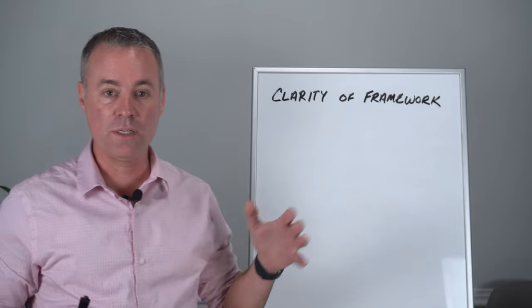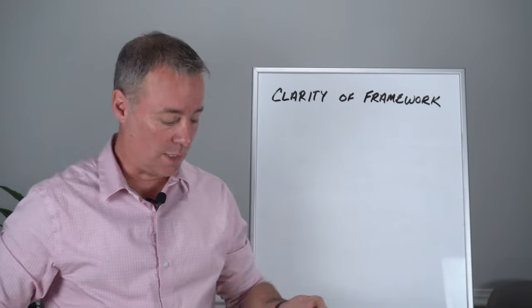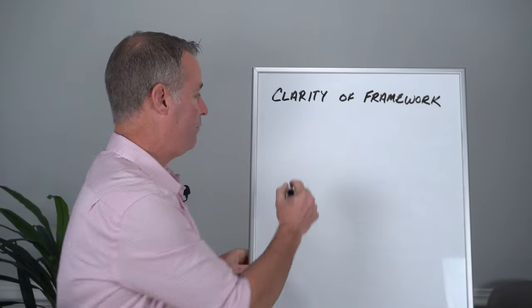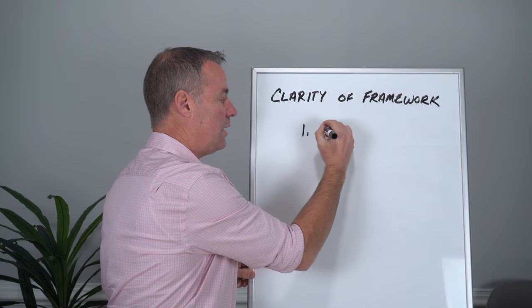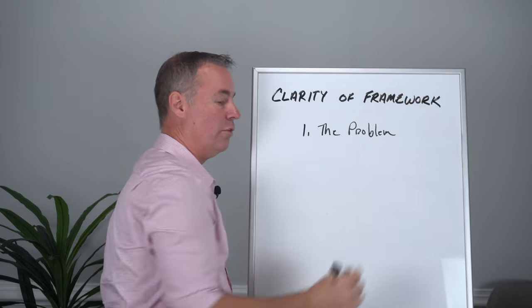The first component is establishing clarity of framework. There are four parts to this. I'm going to run through them really quick. These are really simple concepts that I think you guys can master in a very short amount of time. So first is, can we clearly state the problem? Number one is, do we know the problem that we're trying to solve?